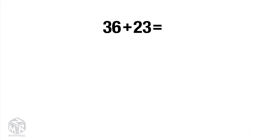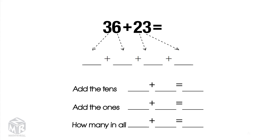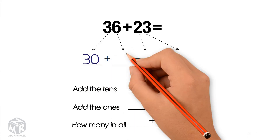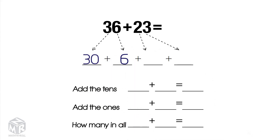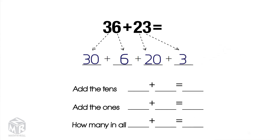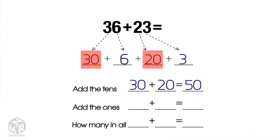Let's try another example: 36 plus 23. 36 breaks up into 30 and 6. 23 breaks into 20 and 3. First, we add the tens: 30 plus 20 equals 50. Next, we add the ones: 6 plus 3 equals 9.